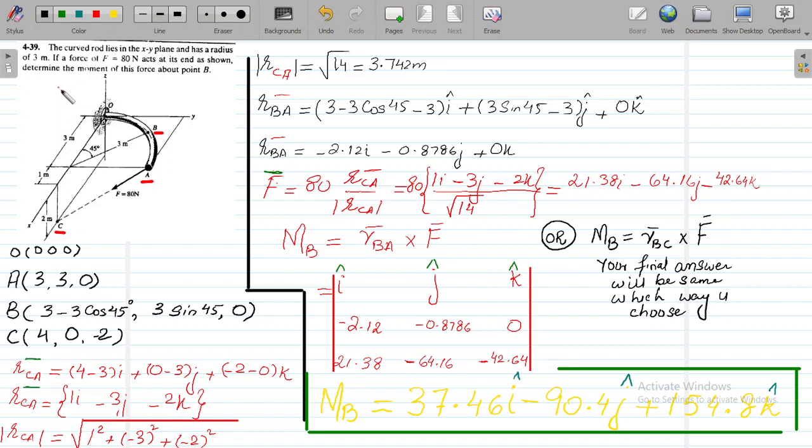Hello everyone, hope you are doing well. Here we have a problem. The problem states that the curved rod lies in the xy plane and has a radius of 3 meters. If a force f equals 80 newtons acts at its end as shown, determine the moment of this force about point B.